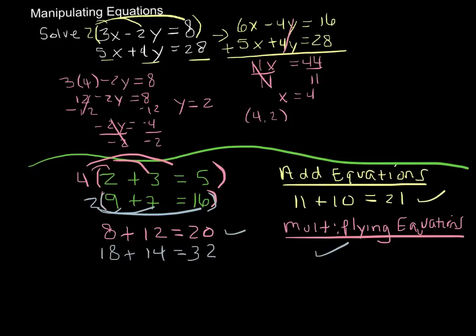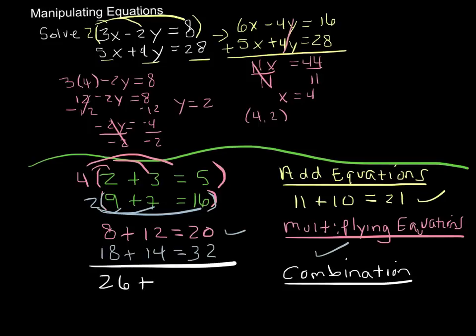And what about a combination of the two? Can we multiply equations and then add them? Well, I think at this point, you can reason that of course we can, but let's just see. I multiplied both the equations, and now I'm going to add them. So 8 plus 18 is 26. 14 plus 12 is 26. And 20 plus 32 is 52. A new true statement. So there it is.